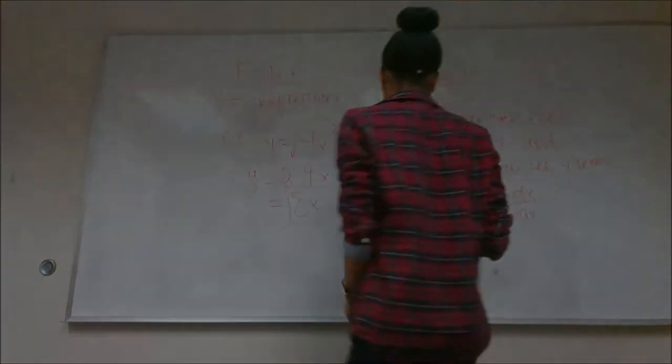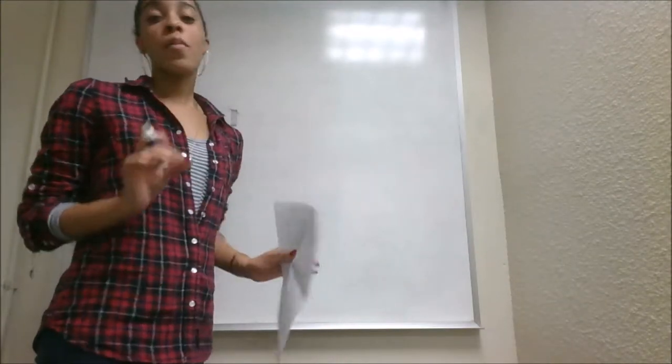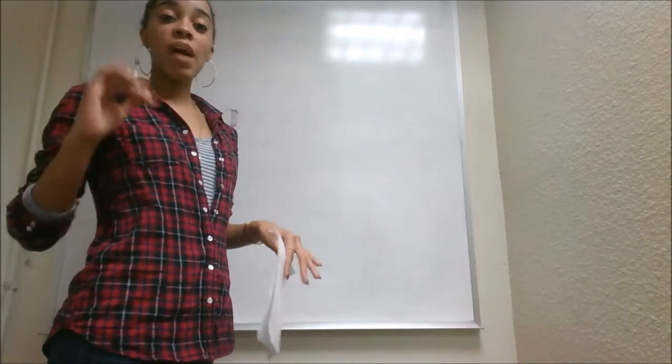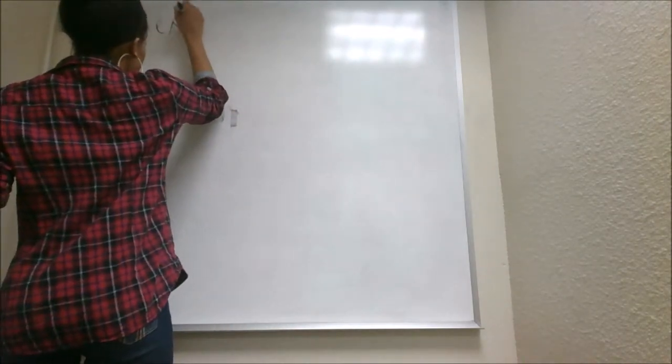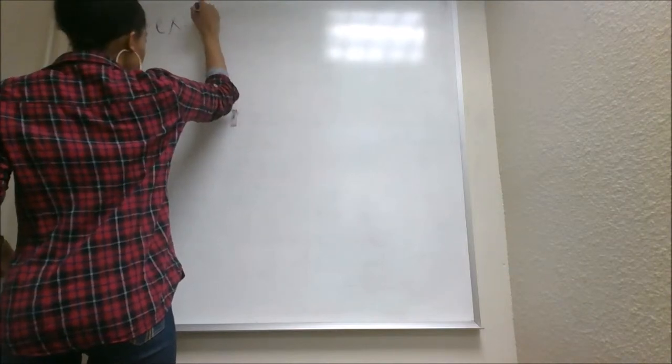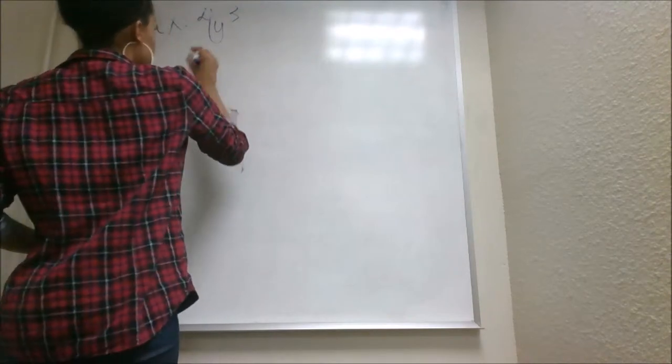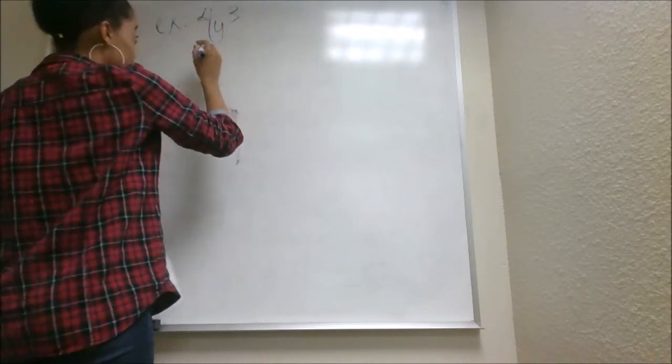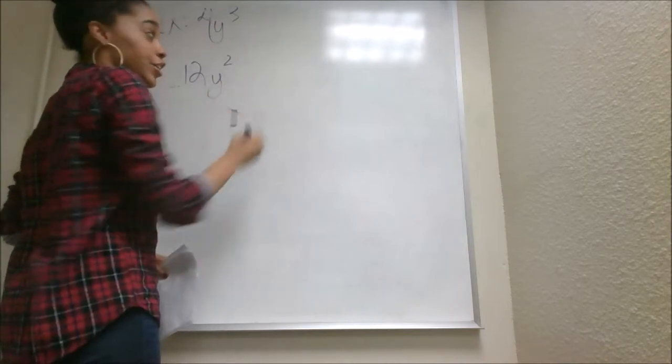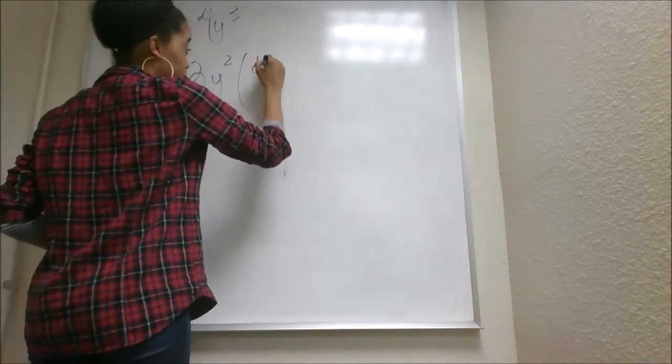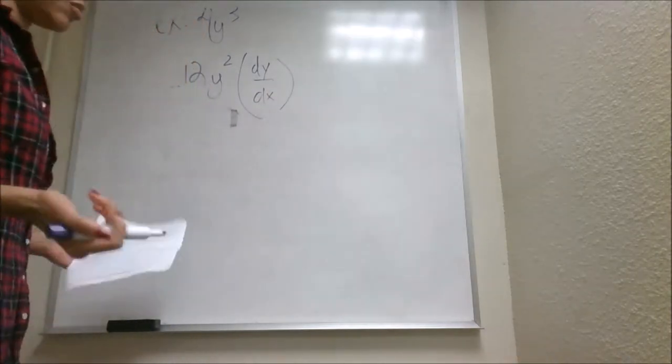Now I'm going to give you guys an example of this. So like I said, whenever you see a y term, you want to always make sure that you multiply it by dy over dx. So let's say, for example, you have 4y cubed. To find the derivative of that, you're going to do your power rule to give you 12y squared. However, you're also going to multiply it by your dy dx. And you do this because it is a chain rule.